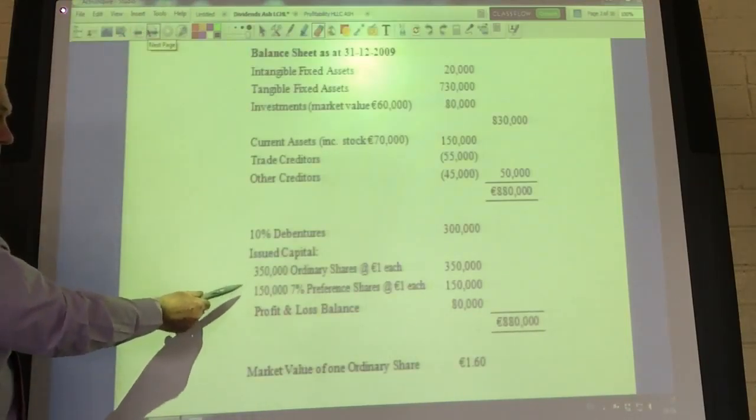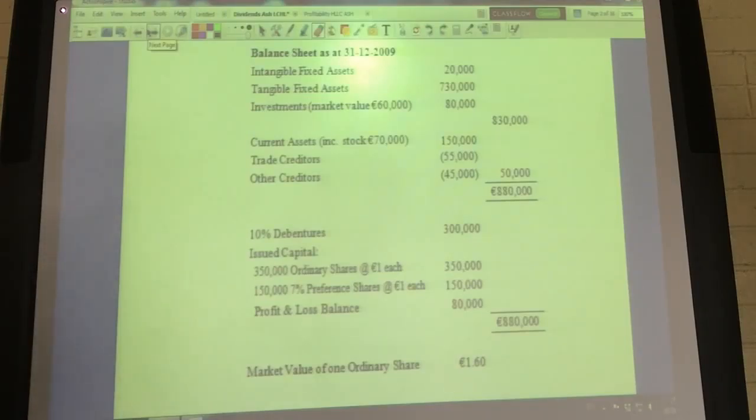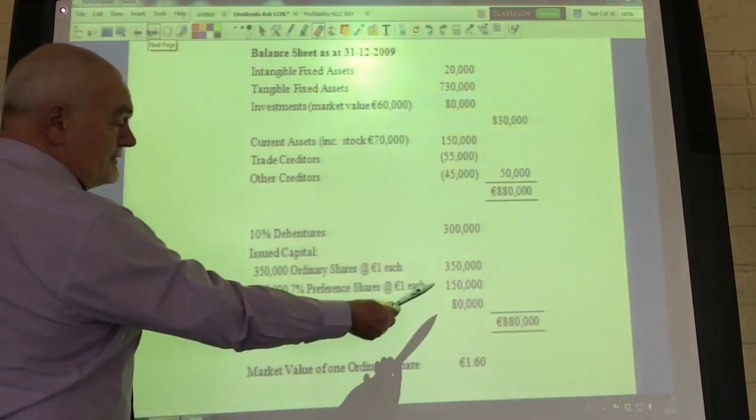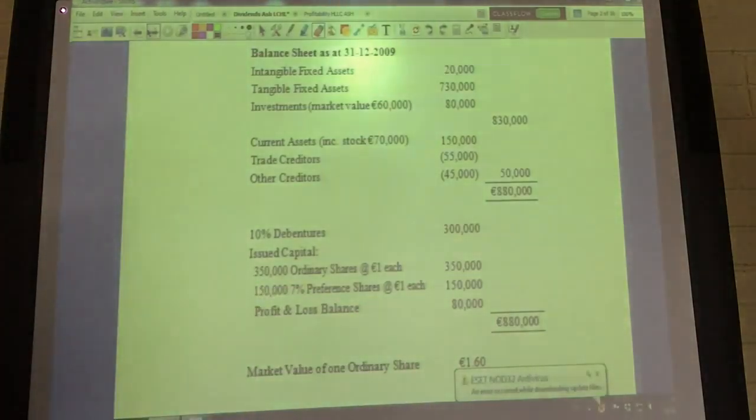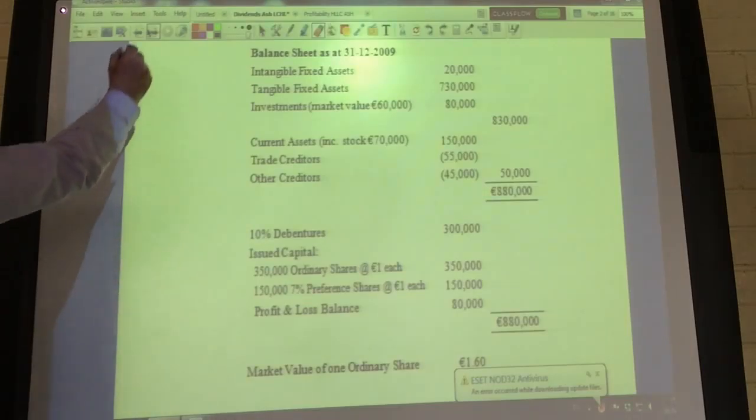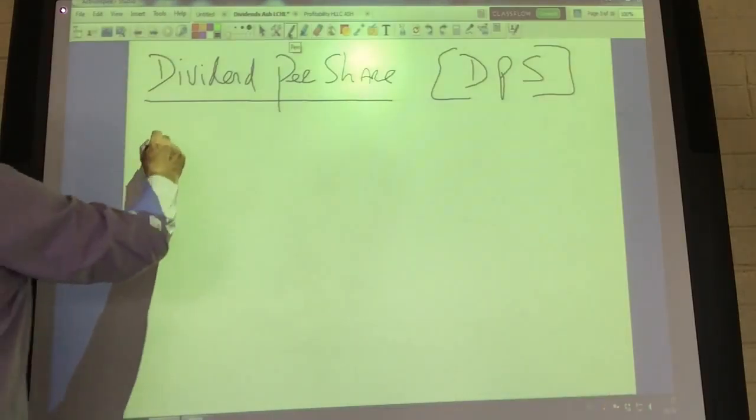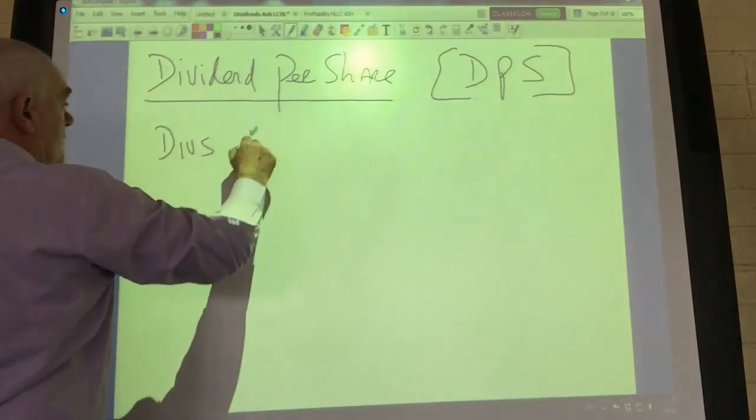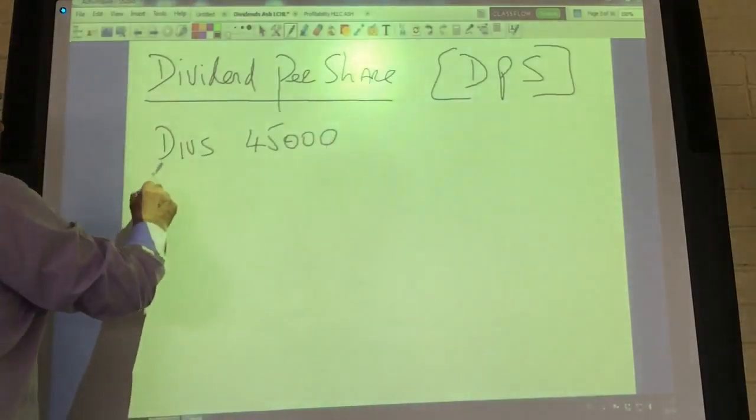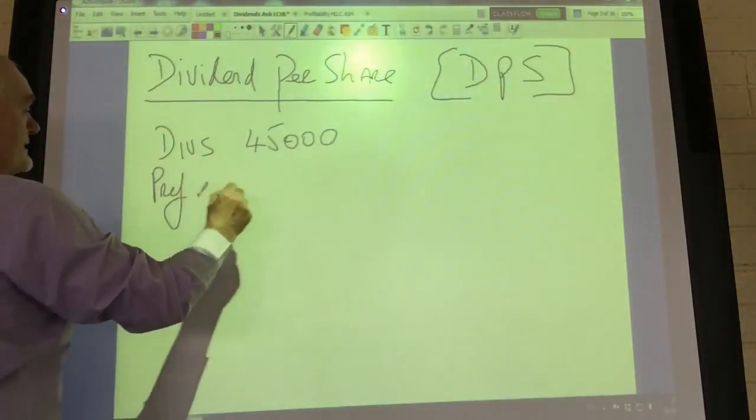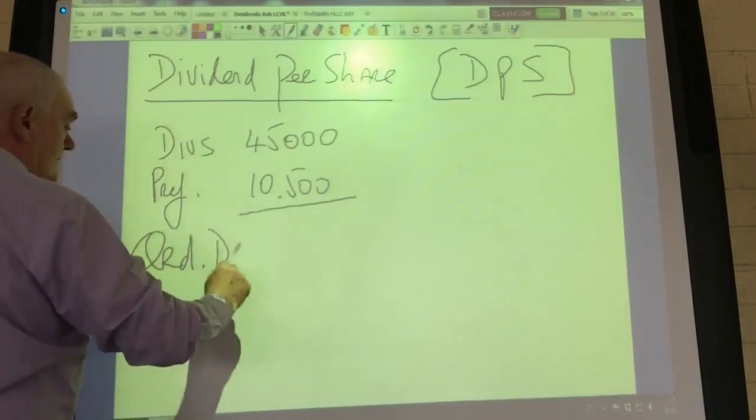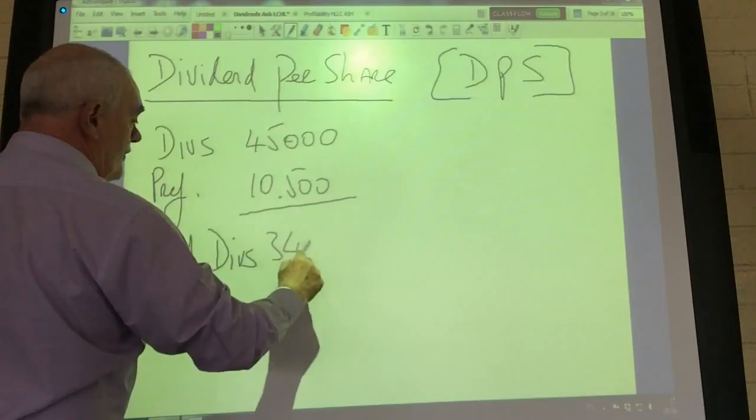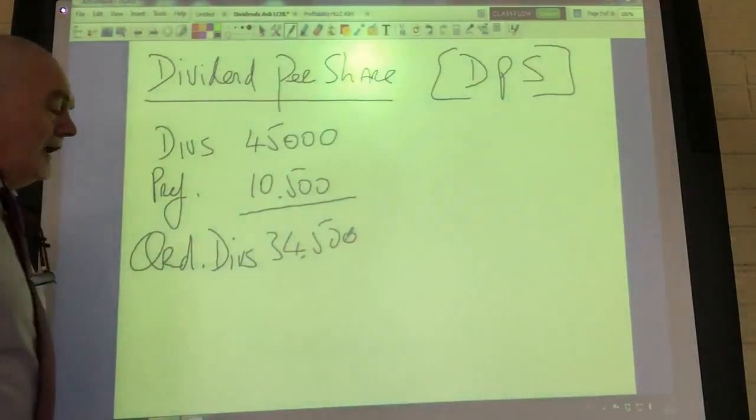The preference shareholders have invested 150,000 euro in the company and are to earn 7%, so 7% of 150,000 is 10,500. That means of the 45,000 dividends, preference dividends are 10,500, so the ordinary dividends are 34,500.